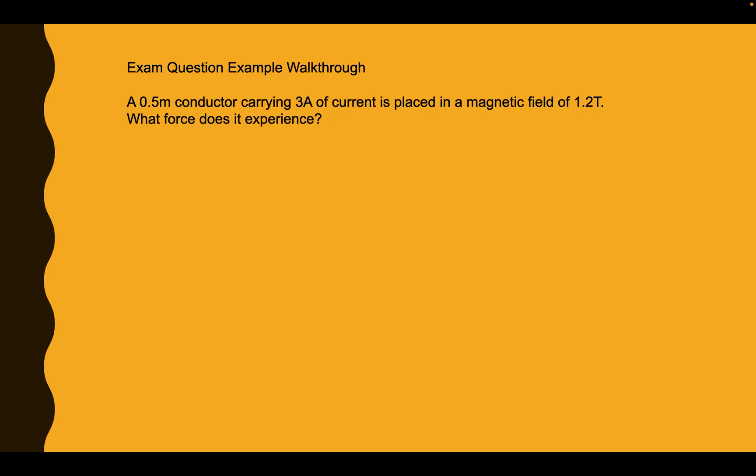So we've got a question to go through, then I'm going to leave you with a revision page at the end that you can scan over to recap. Okay, let's read through this and analyze this question together then. So, we'll underline stuff as we go, as we've done before. A 0.5 metre conductor carrying 3 amps of current is placed in a magnetic field of 1.2 tesla. What force does it experience?